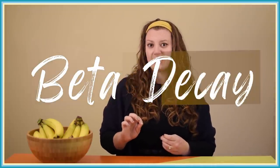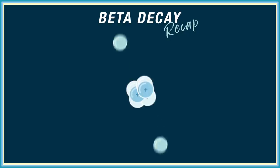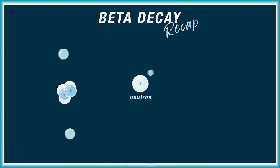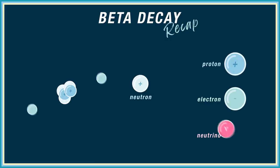To understand where the neutrinos in bananas come from, we need to talk about radioactive decay. Specifically, we need to talk about a type called beta decay. We actually talked about beta decay in our first episode, and forgetting the complex terminology, it's just a process where one element turns into another one. Inside an unstable nucleus, a neutron can become a proton, an electron, and a neutrino.